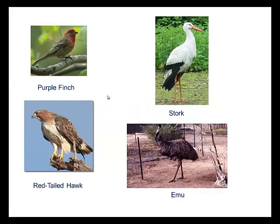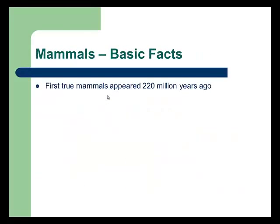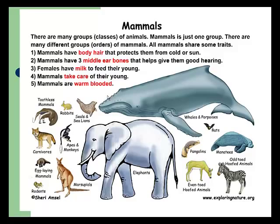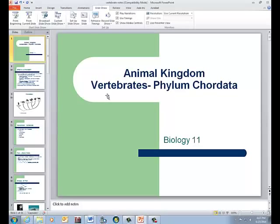Lastly, mammals — the first true mammals appeared a long time ago. Characteristics include hair, mammary glands that produce milk, lungs for breathing air, four-chambered hearts, and endothermy — they generate their own body heat. They use internal fertilization, and mothers care for their young. Examples include familiar and less-familiar animals like pangolins and manatees. Jot down any questions and bring them to class — have a fantastic day!